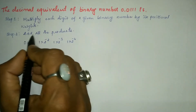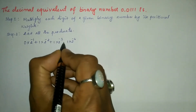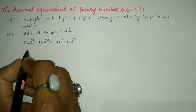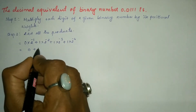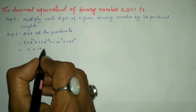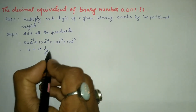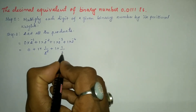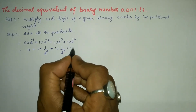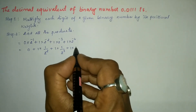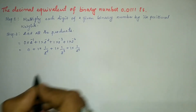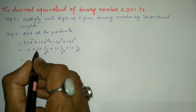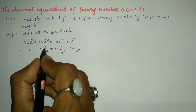Step two is to add all the products. So we write plus signs between them. Zero into anything becomes 0, so we write 0 plus. Then 1 into 2 to the power minus 2 can be written as 1 divided by 2 to the power 2, plus 1 divided by 2 to the power 3, plus 1 divided by 2 to the power 4.